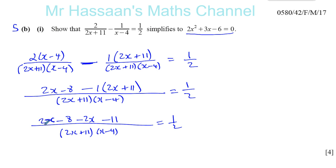So this can be now simplified. You've got 2x minus 2x, which is disappeared, and you've got minus 8 minus 11, which is negative 19. So you have minus 19 over 2x plus 11 times x minus 4 equals a half.